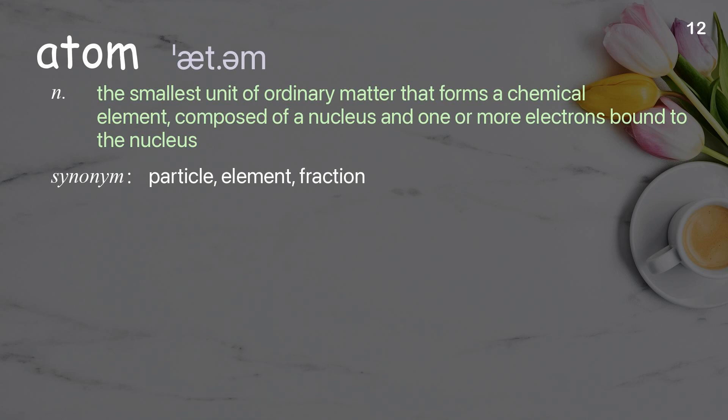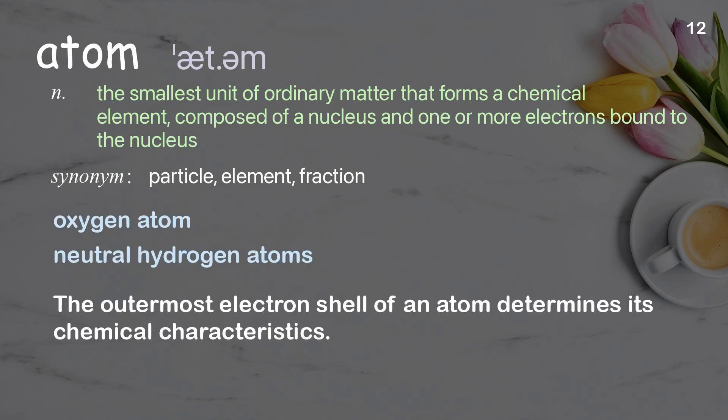Atom: The smallest unit of ordinary matter that forms a chemical element, composed of a nucleus and one or more electrons bound to the nucleus. Examples: Oxygen atom. The outermost electron shell of an atom determines its chemical characteristics.